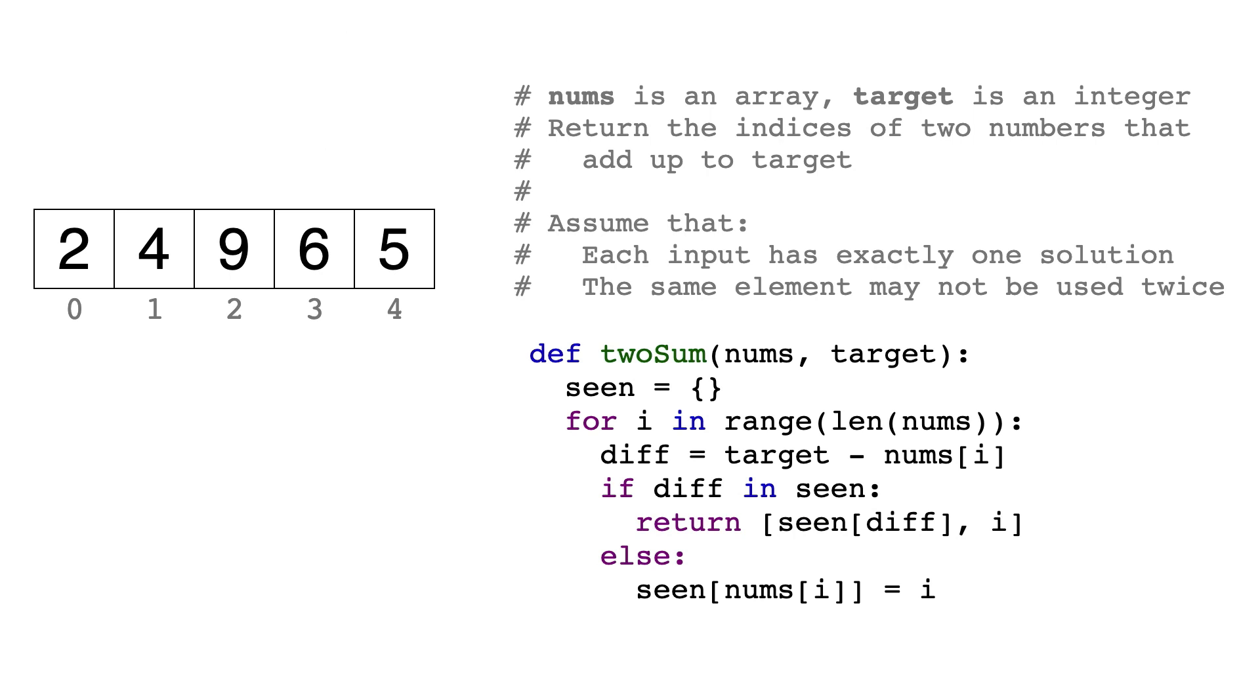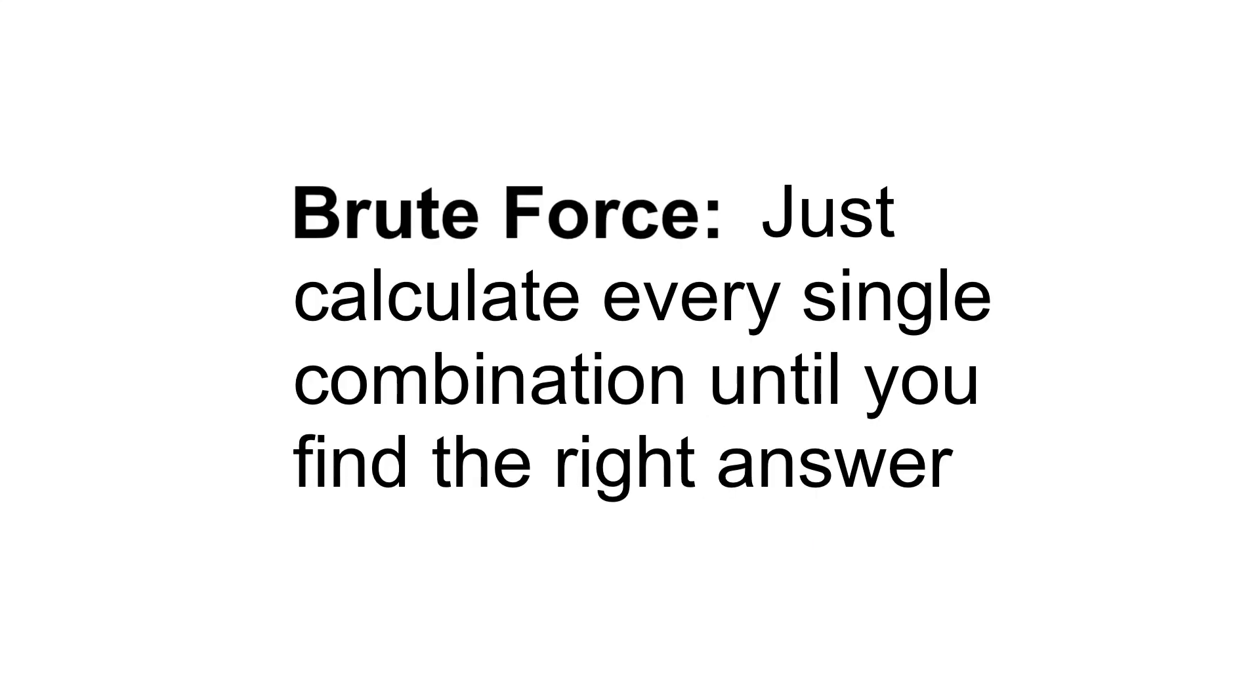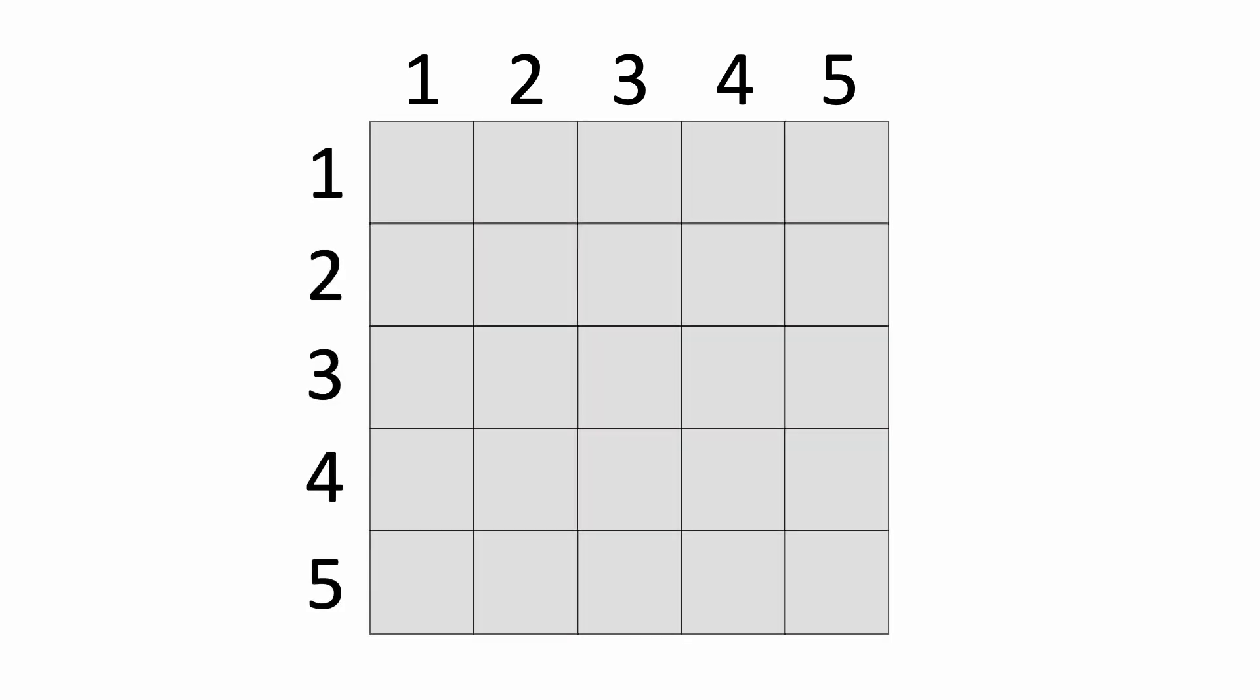So before I go into the O(n) solution, let's first look at the brute force solution, which is just to calculate the sum of every combination of pairs in the array until you find the sum that equals target. So for example, if this is the array, we'd have to calculate the sum of each number with every other number in the array. So starting with 1...